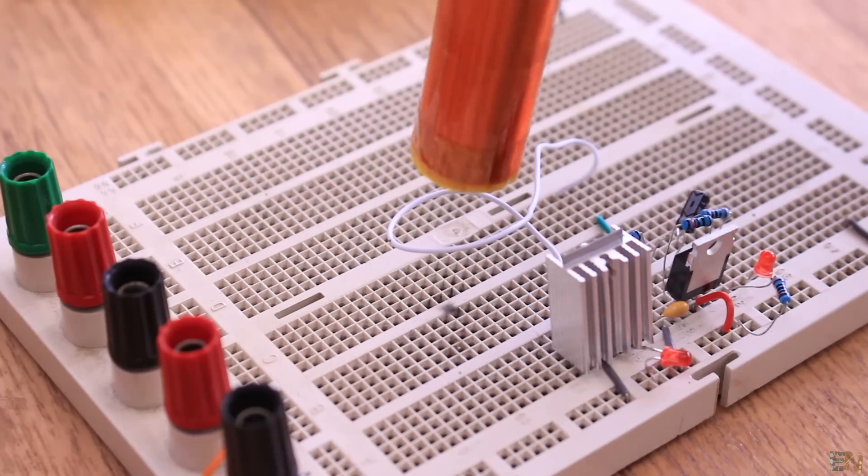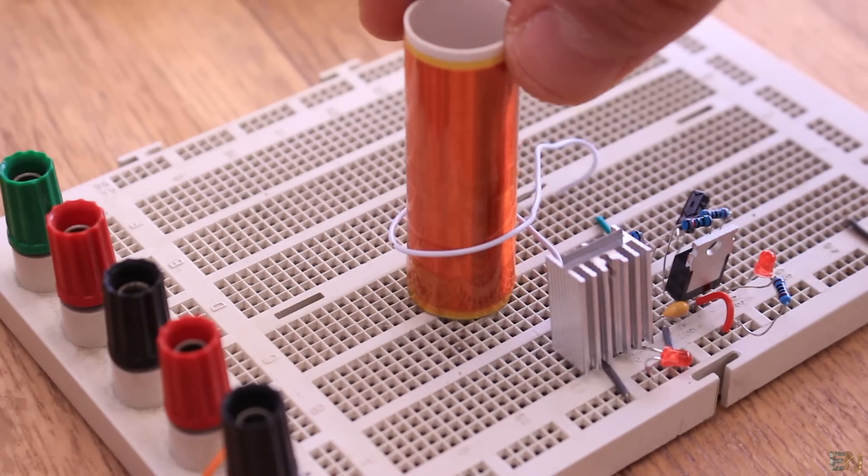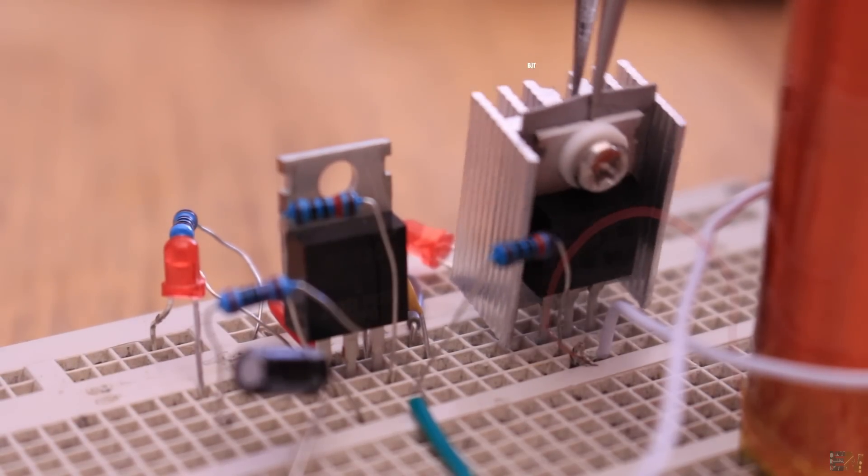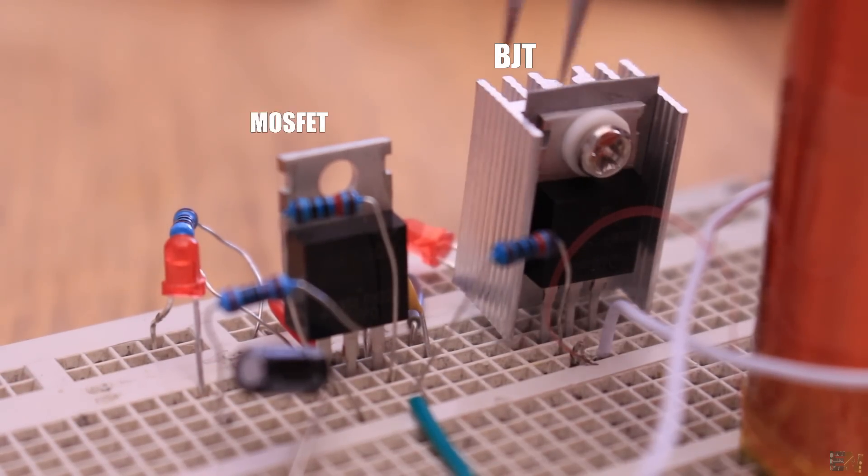As you can see, this one is also very simple. Now we have 2 transistors. One is once again a BJT, but now we also have a MOSFET.